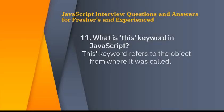What is the 'this' keyword in JavaScript? The 'this' keyword refers to the object from which it was called.